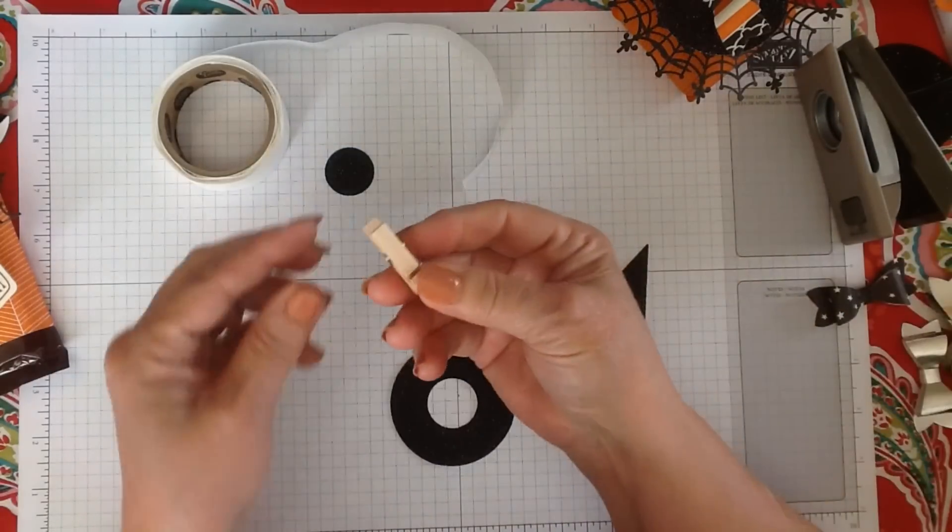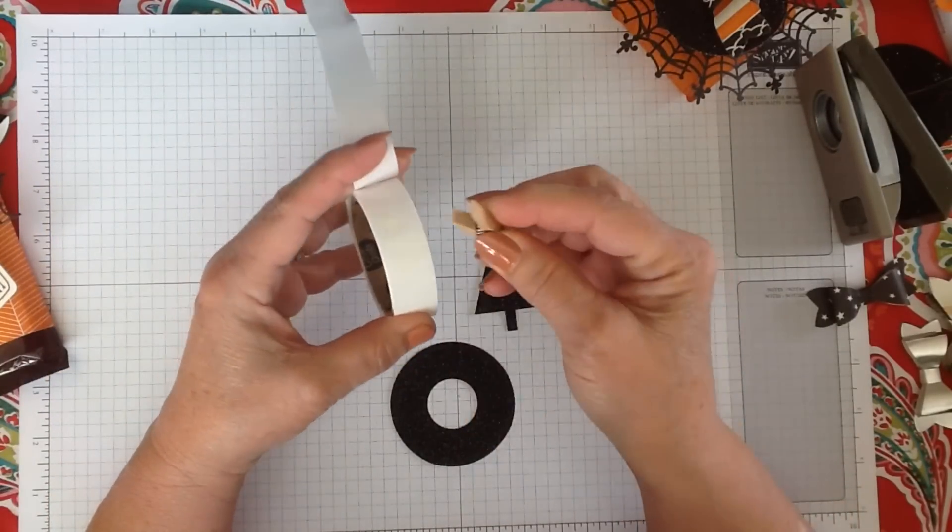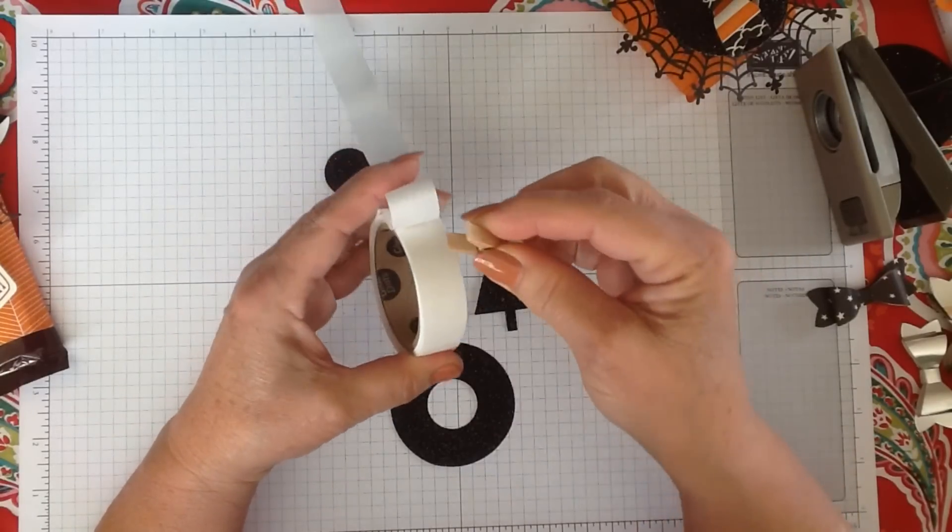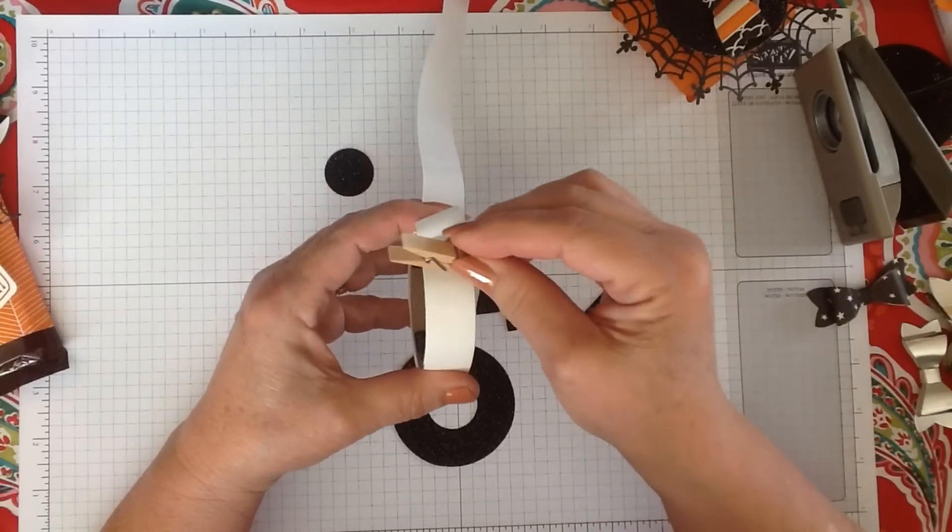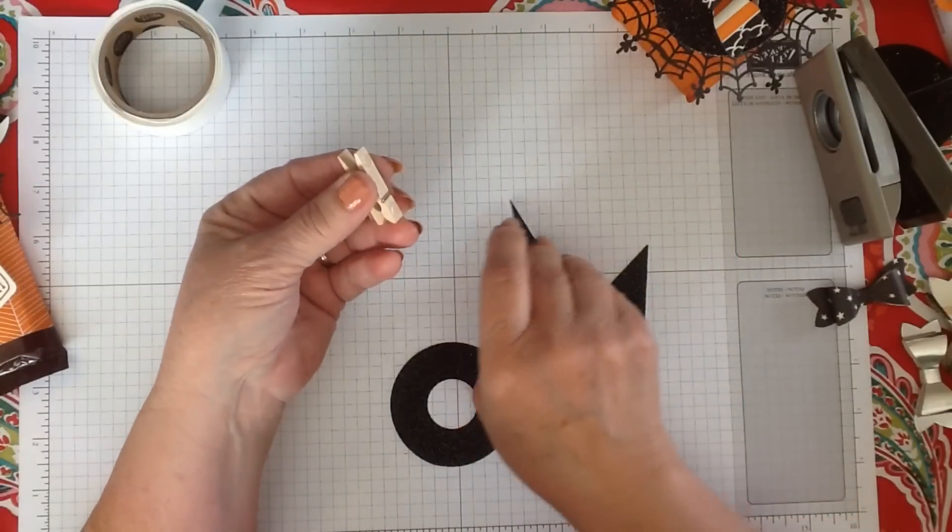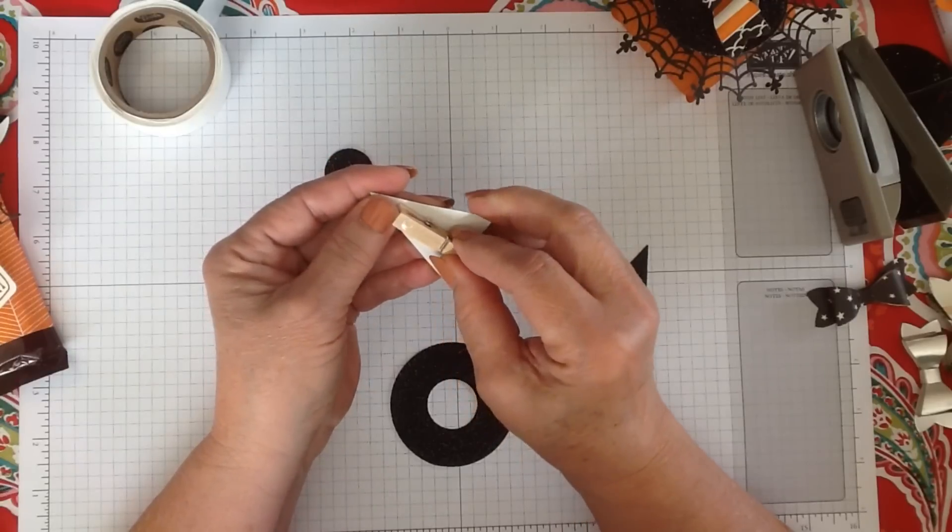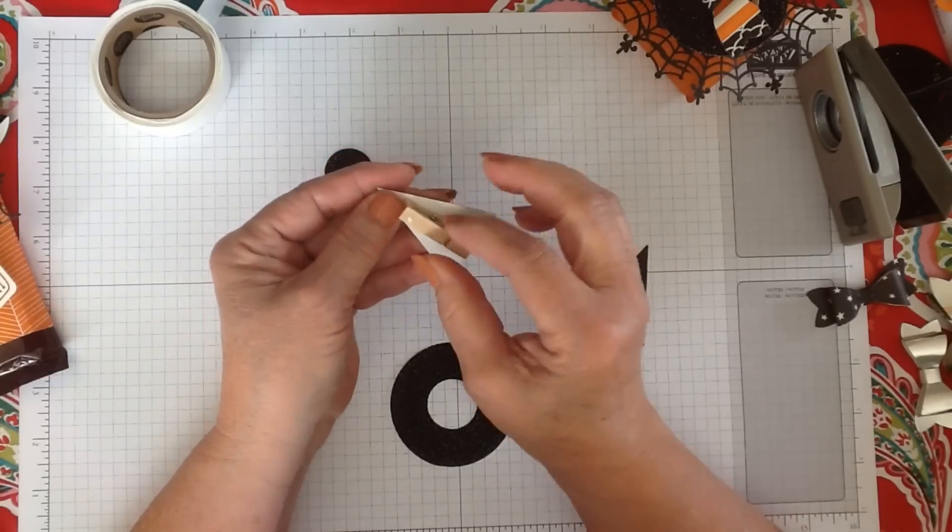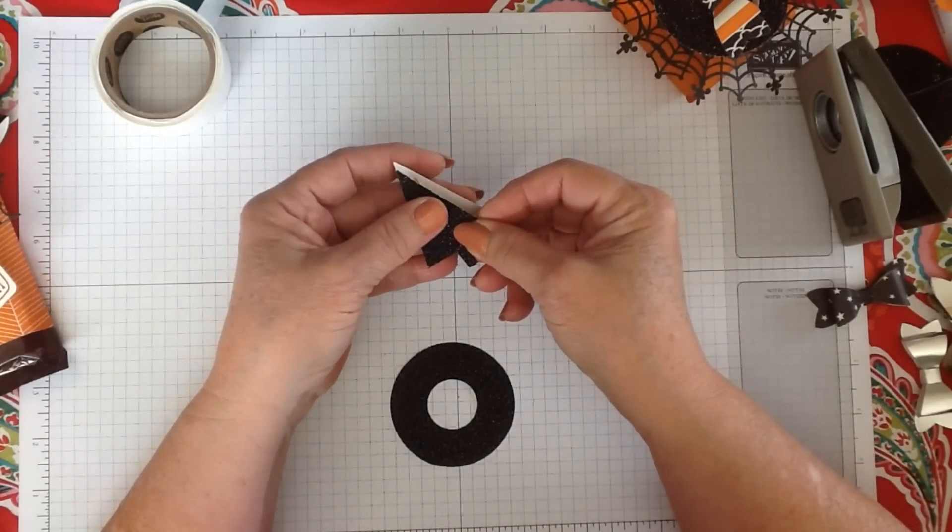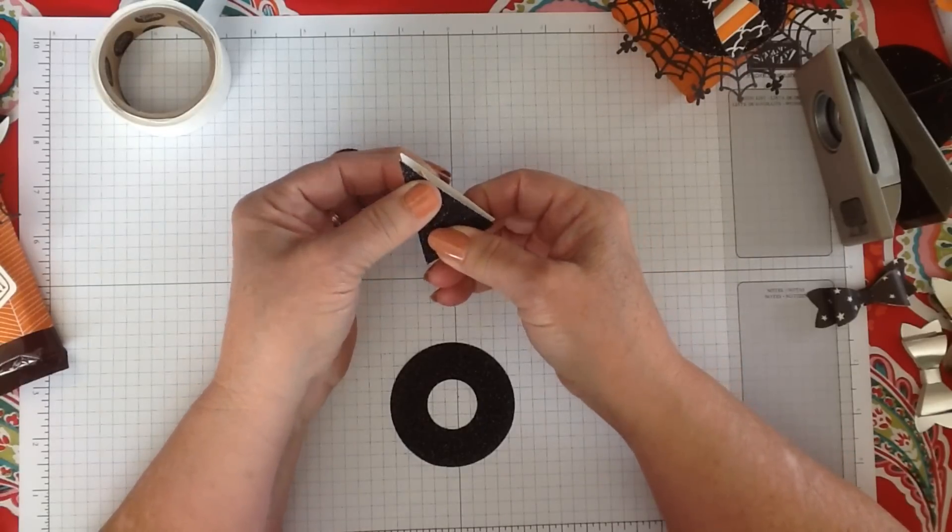On this one, you're going to take your clothespin and put two glue dots on each side of your clothespin. This is very simple and fun to do. Now take your two trees and stick it on each side. You don't want your clothespin to show, so go down a little ways. Don't go into your stem here because your clothespin's a little bit wider than your stem. Put the other one right on top and push it on there so your glue dots stick.